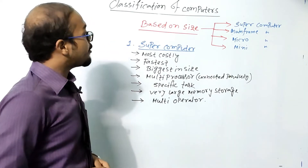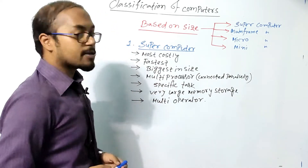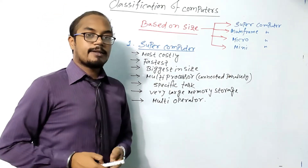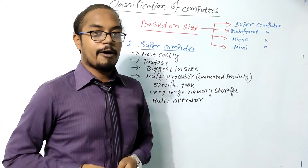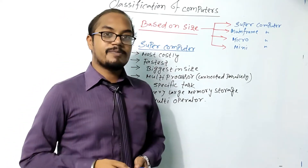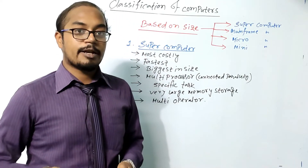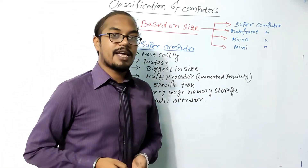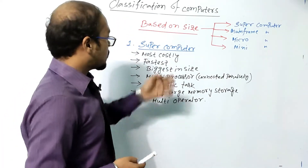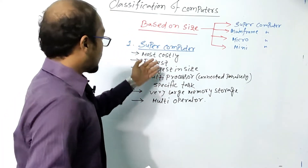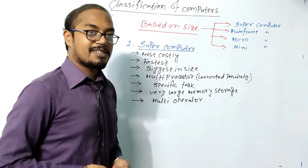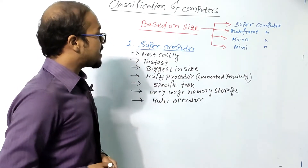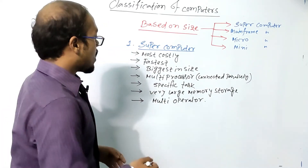According to size, first come supercomputers. After hearing the term 'super' we always think of superheroes — just as a Hollywood superhero film is very costly, supercomputers are also the most costly. Like superheroes are always the fastest, supercomputers are also the fastest, and the biggest in size, with multiprocessors.